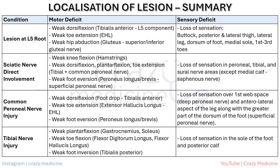This table provides a comprehensive summary of the lesions we have covered — including those at the L5 root, sciatic nerve, common peroneal nerve, and tibial nerve — outlining the motor and sensory deficits associated with each lesion.